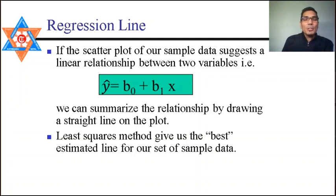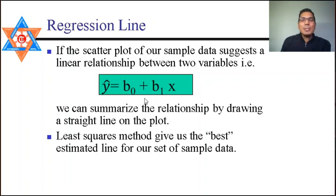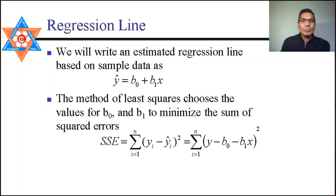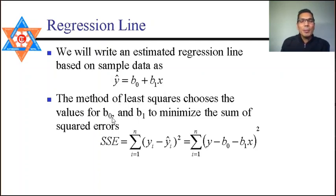The regression line is ŷ = b₀ + b₁x, showing the relationship between x and y. From the scatter plot we observe whether the data behaves like a straight line. To estimate b₀ and b₁ from observed data, we use the least squares method, which minimizes the sum of squares of errors.